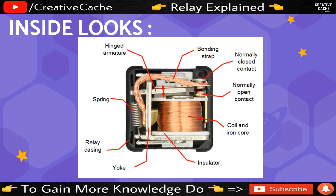Now you can see what the inside looks like. There is a hinged armature and a bonding strap. There is a Normally Closed contact — and also a Normally Closed contact with a copper layer. You can see a metal connector. There is a gap for the Normally Open contact. There is an iron core, which is a coil.